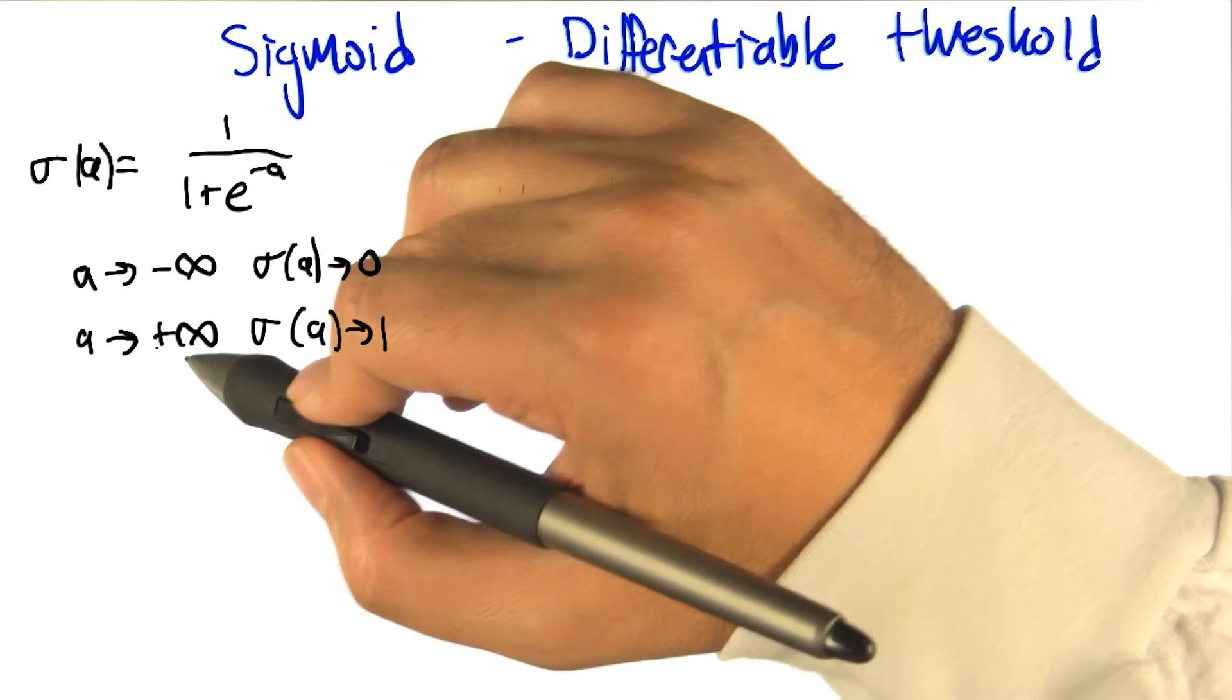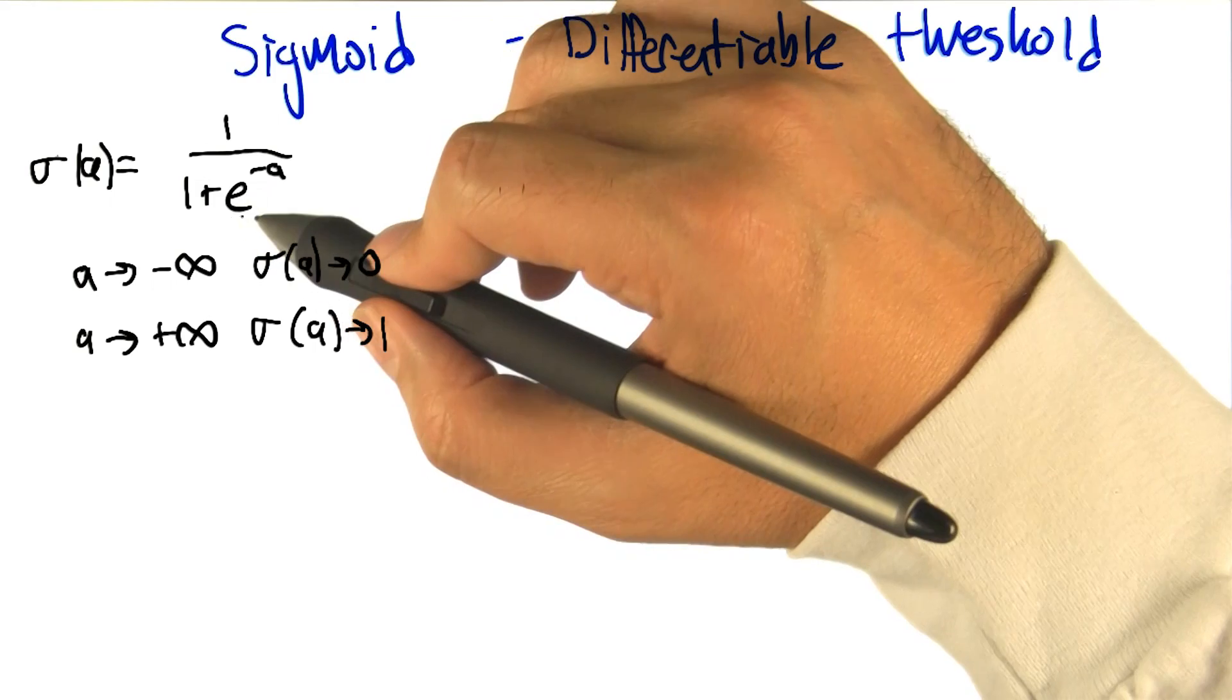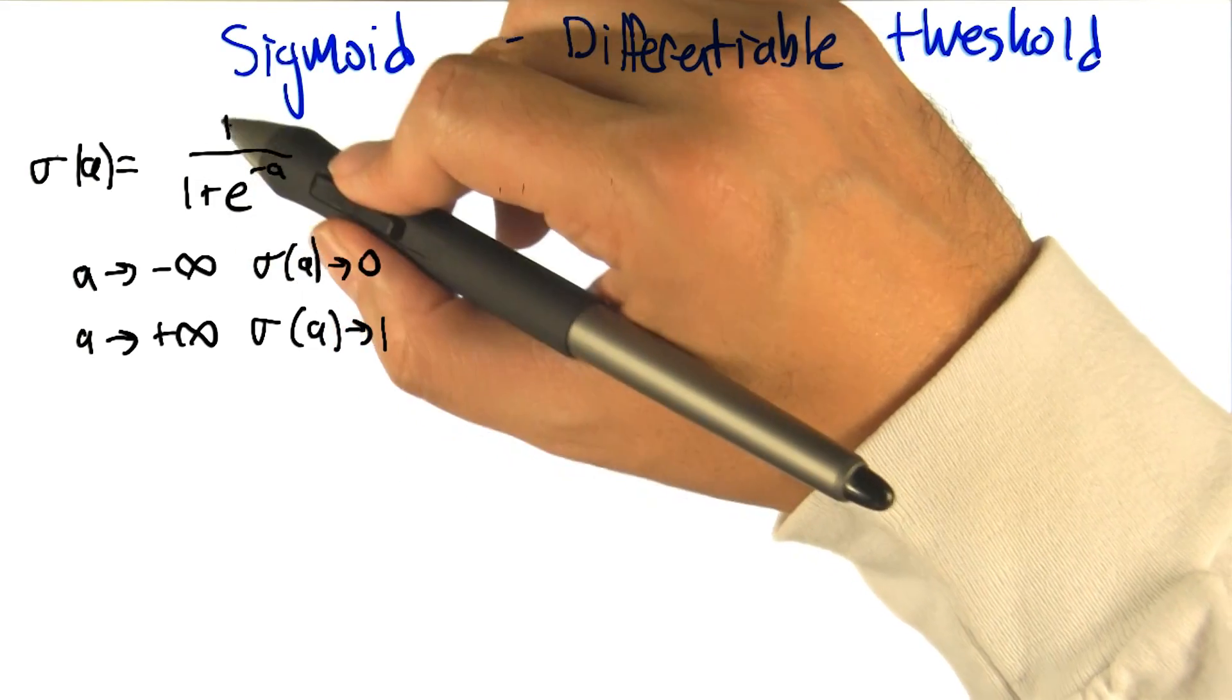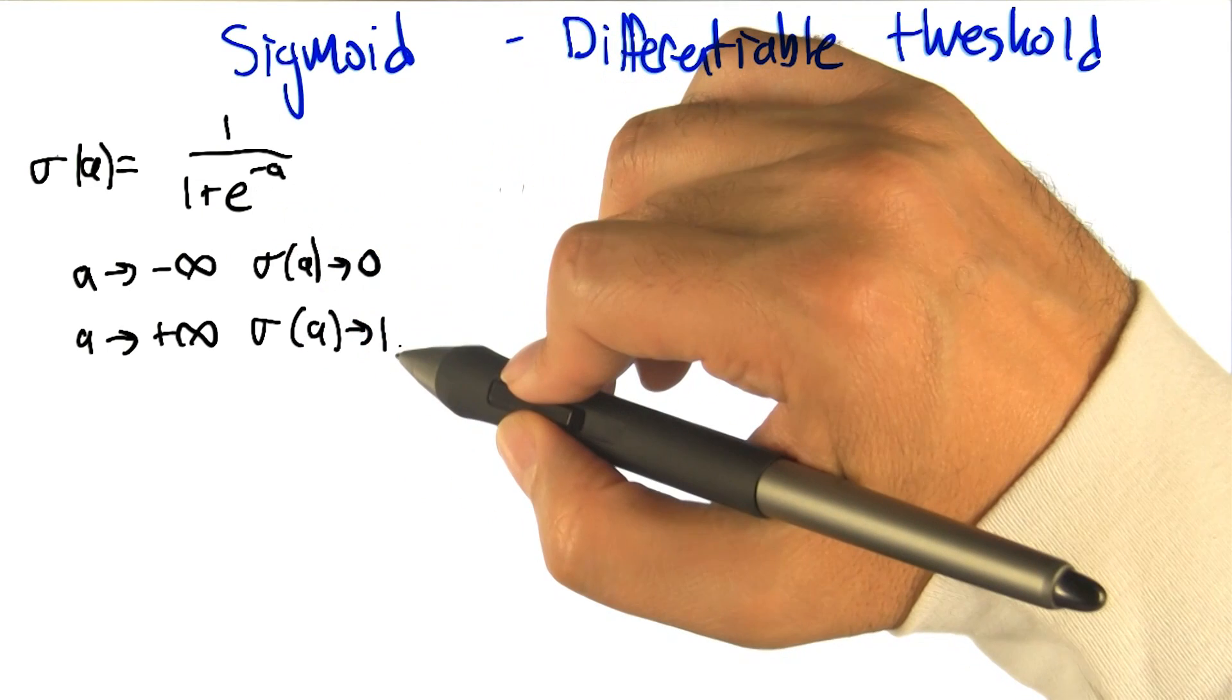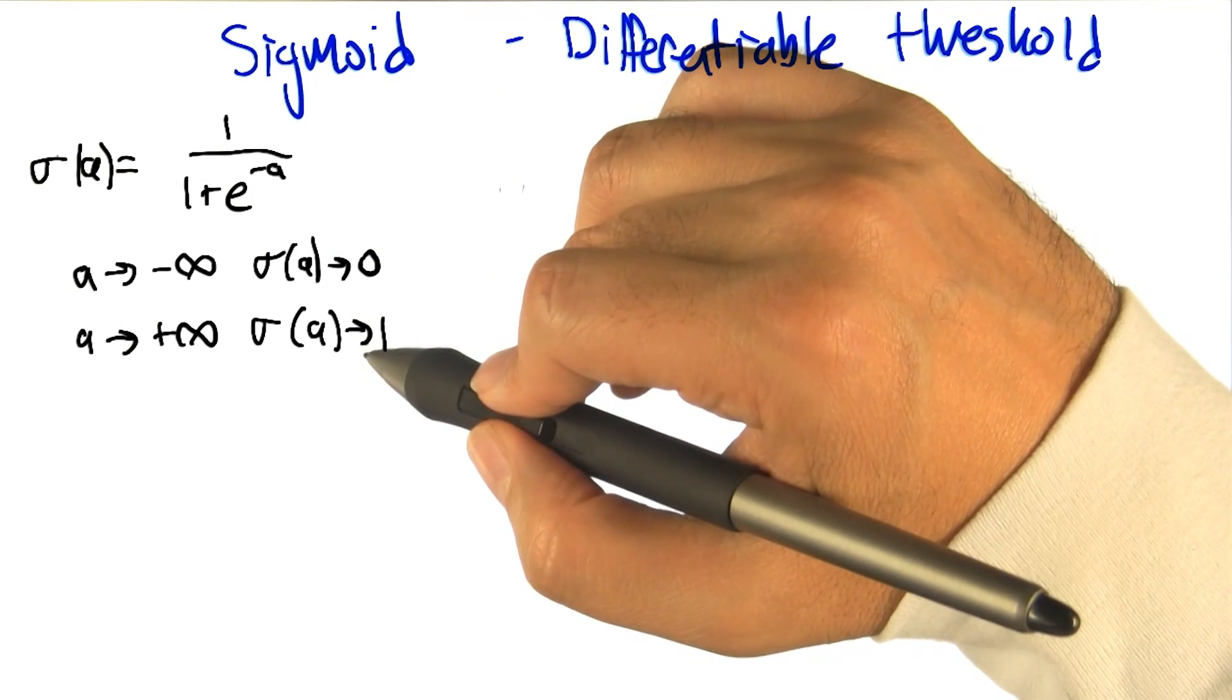And as the activation gets really large, we're talking about e to the minus something really large, which is like e to the negative infinity, which is like almost zero. So one over one plus zero is essentially one. So on the one limit it goes towards zero, and the other limit it goes towards one.